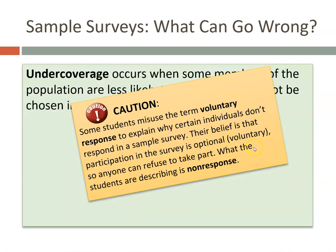You need to be careful not to misuse the term voluntary response to explain why certain individuals don't respond in a sample survey. Voluntary response is when you invite anyone to respond if they want to — like calling in to give an answer. If you've already selected people through a random sample and they simply don't respond, that's non-response, not voluntary response.